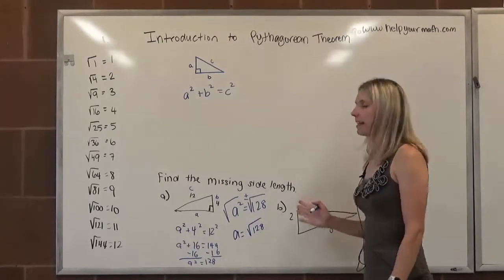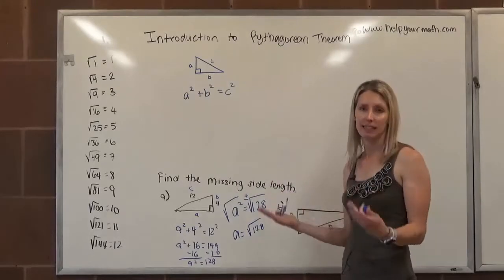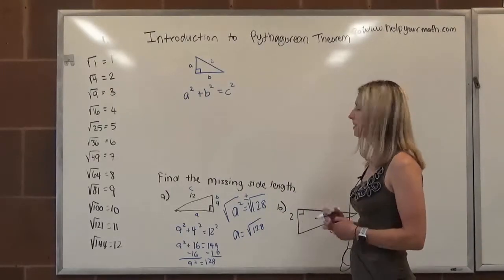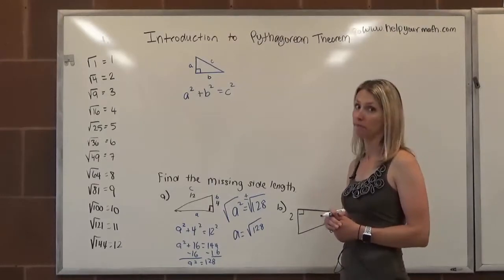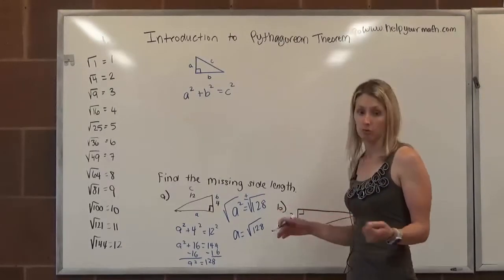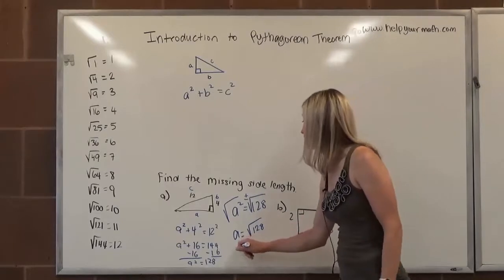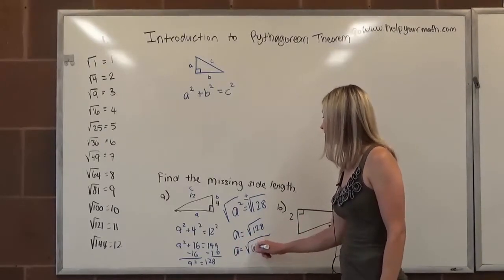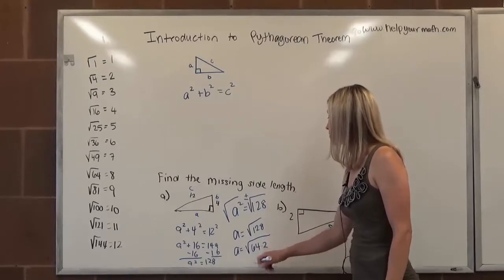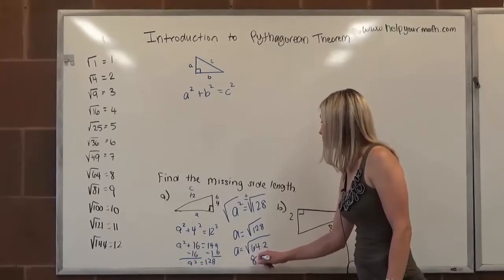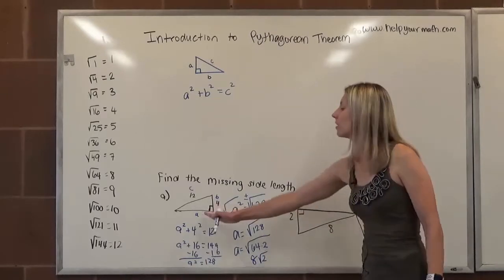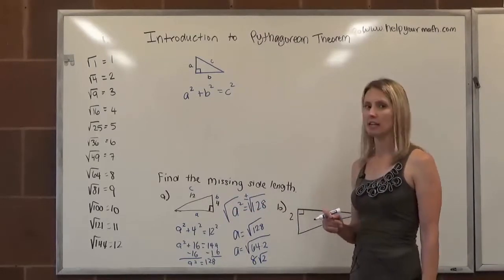Now, it doesn't specify here, but we're going to assume that we need to simplify the radical if it can be simplified. So the question is, does 128 have any perfect square factors? And in fact, it has a lot of perfect square factors, the largest of which is 64. We can rewrite 128 as 64 times 2. The square root of 64 is 8, and the square root of 2 is stuck as the square root of 2. So completely simplified, the missing side had a length of 8 square root of 2.